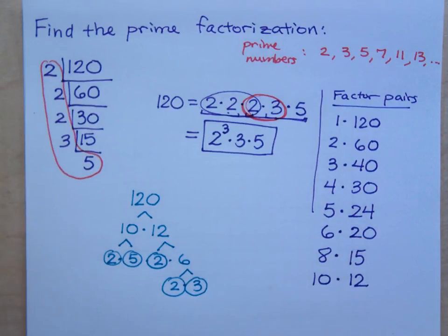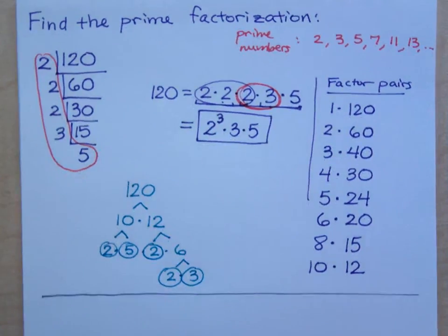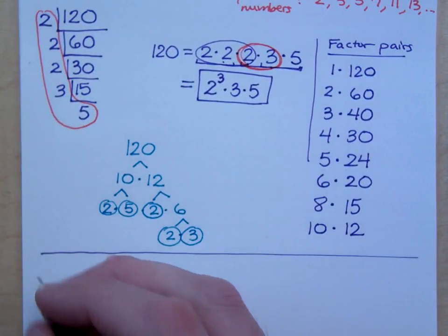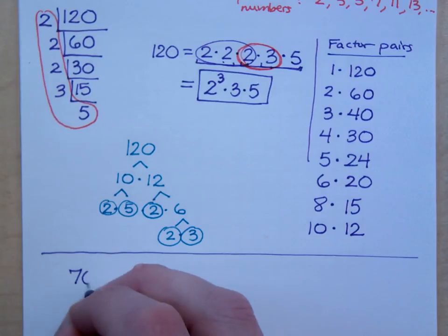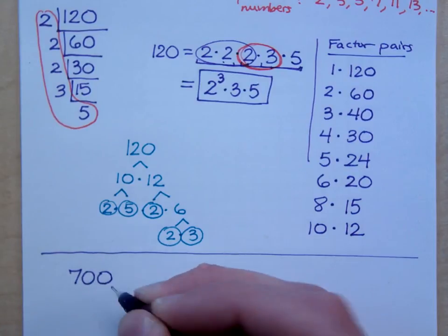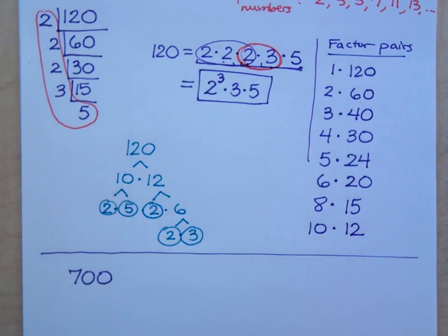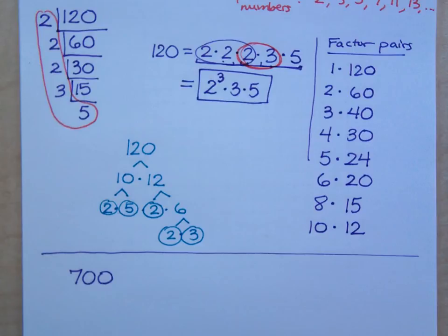Now let's make things just a little bit more challenging. What if I gave you a larger number? If I gave you the number 700? You've got several different ways of doing this. You could do the division that I did over here on the side. Or you could do a factor tree. It's up to you.